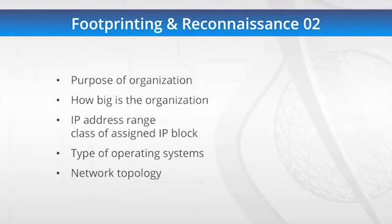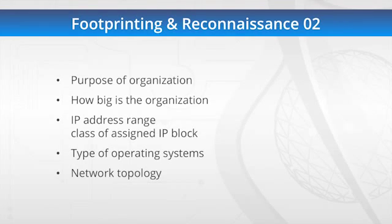When we start the class, we'll do an introductory module covering what ethical hacking is and key definitions. Then we'll get into footprinting — trying to find out what the purpose and size of the organization is, not only from a physical standpoint but also from an IP address range standpoint. You collect that information in footprinting and reconnaissance to figure out what the target is. If you're hunting sharks, you use this kind of bait; if you're hunting tuna, you use that kind of bait — you want to know how big the fish is.